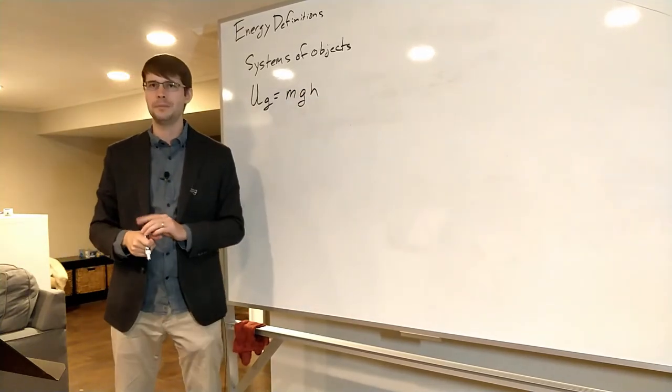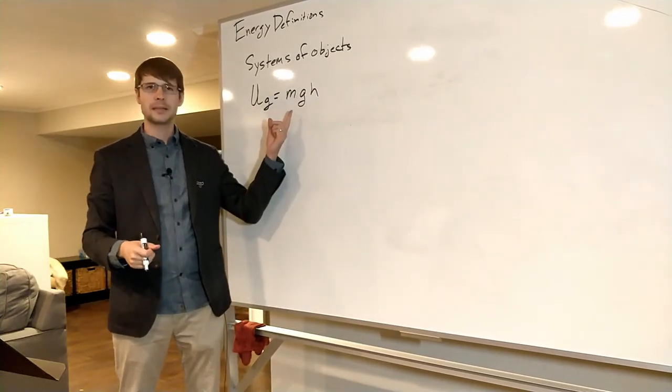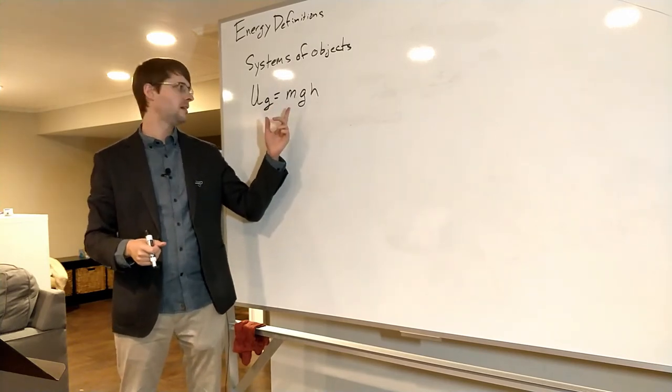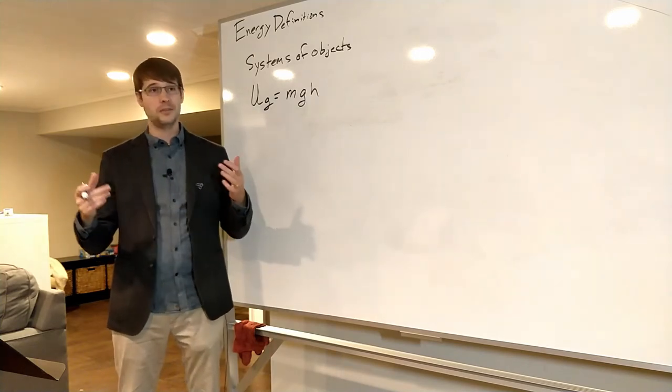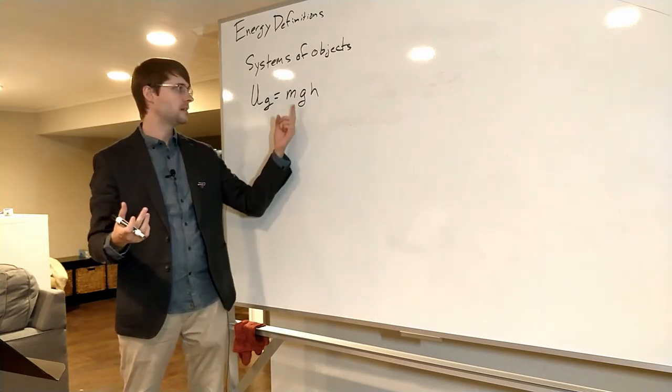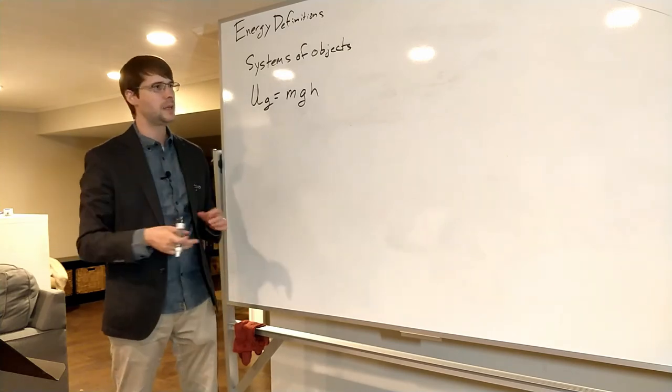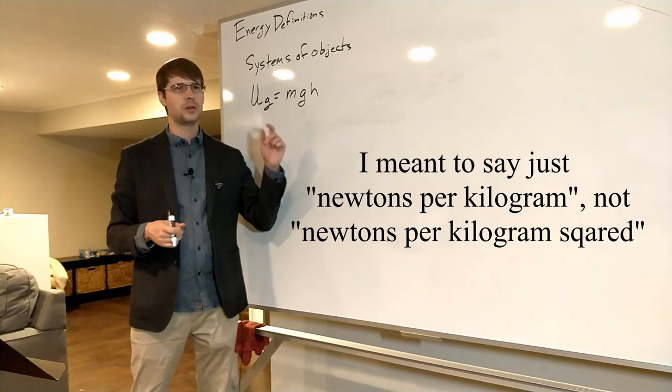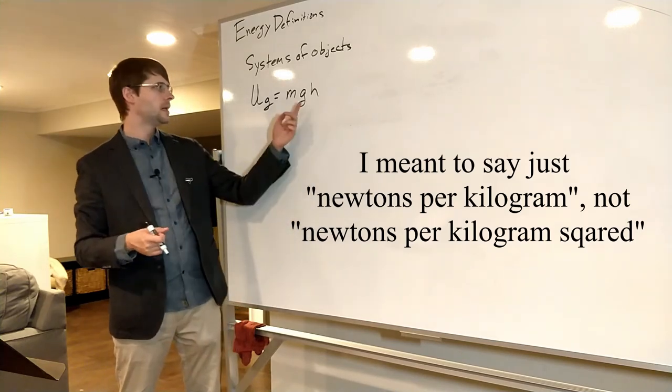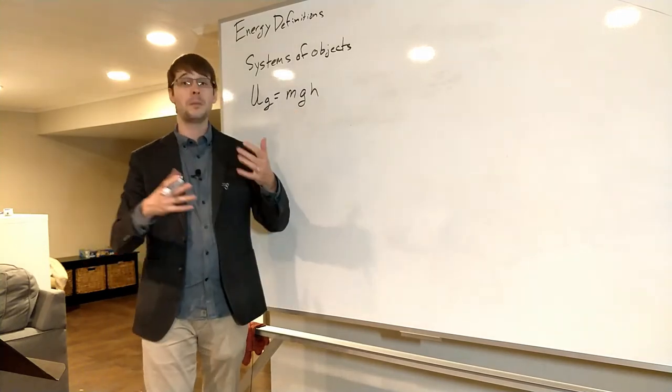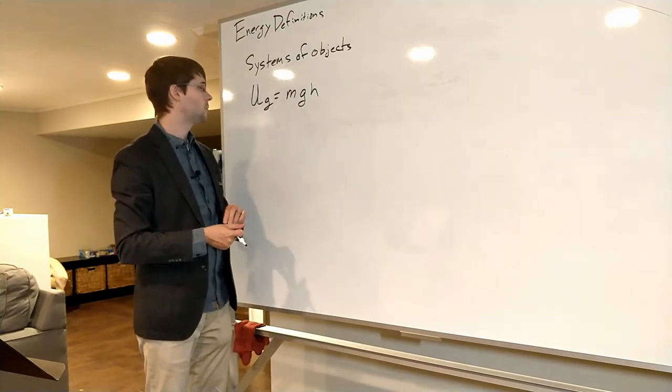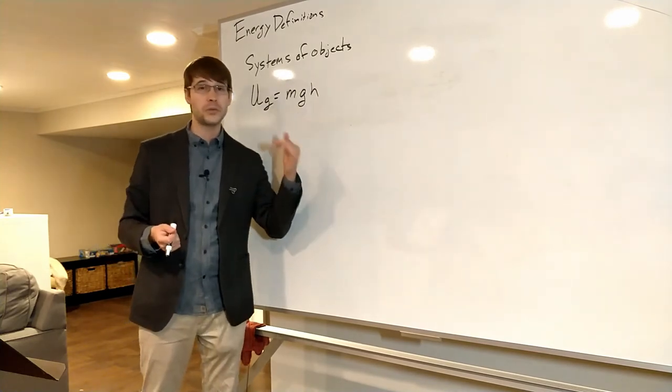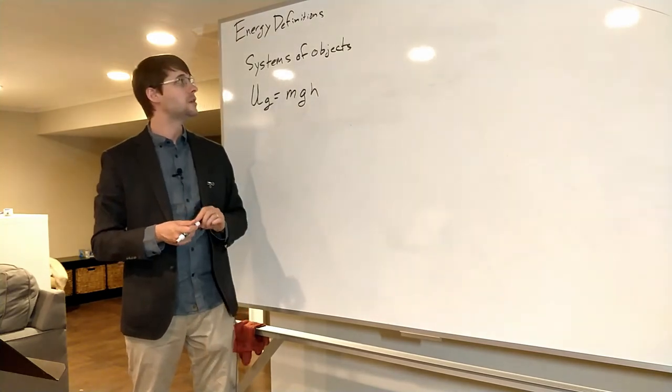Gravitational potential energy is equal to mgh. M is the mass of the object—not the Earth. G is the gravitational field strength of the Earth on the surface; it's 9.8 meters per second squared, or in this case 9.8 newtons per kilogram—that's the same unit. And h is height, the distance above some arbitrary reference point. This is a relative measurement and only works when you're close to the surface of the Earth.